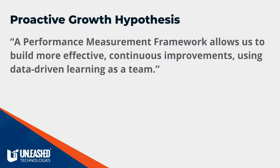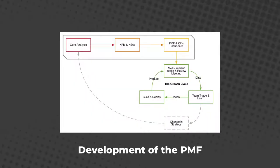Let's start off with a hypothesis for this idea of growth. The hypothesis we're working with is that a performance measurements framework allows us to build more effective continuous improvements using data-driven learning as a team — not working in a vacuum. The framework really is these first three steps to get you to the point of a growth loop. We use data to learn, we come up with ideas to build, and whatever it is that we produce, we measure that and then loop back around.